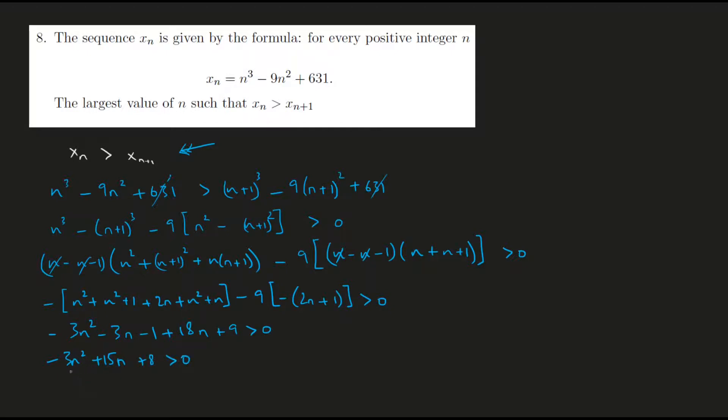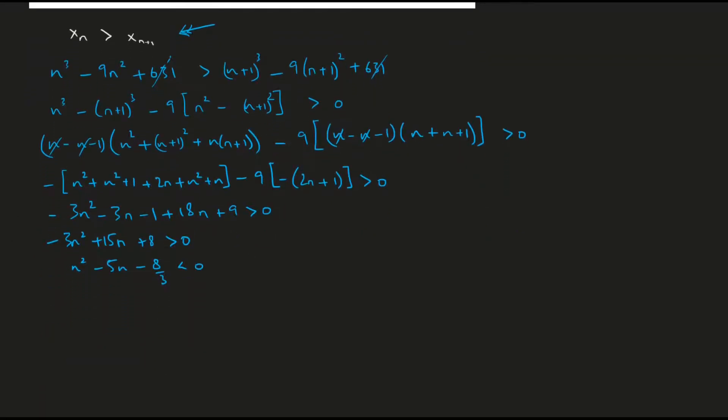If I multiply this entire inequality by minus 1/3, it would become n square minus 5n minus 8 by 3 is less than 0, because I multiplied with a negative number. Now let me just try and solve this as if this expression here is a quadratic equation. So what I'm doing is I'm trying to solve x squared minus 5x minus 8 by 3 equal to 0. I'm trying to find the roots of this quadratic.